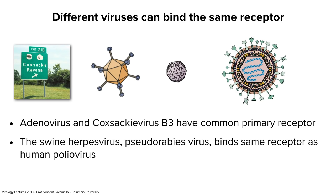Most of the time it's one virus, one receptor — three types of polioviruses all bind the same receptor. But sometimes different viruses bind the same receptor. For example, adenovirus and Coxsackievirus B3 both bind the same receptor. Coxsackievirus is named after Coxsackie, New York. A swine herpes virus called pseudorabies virus also binds the same receptor as poliovirus. Two different viruses binding the same receptor — the viruses have simply evolved to bind the same receptor molecule.